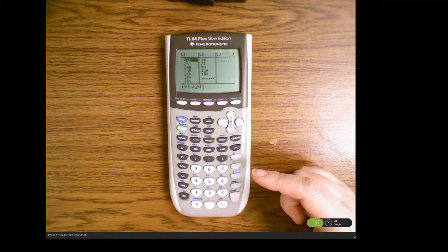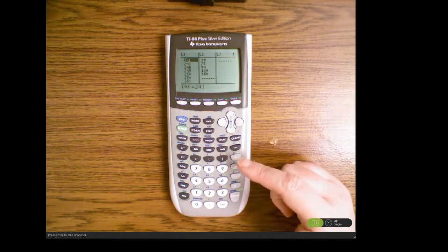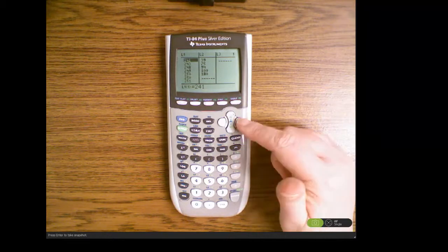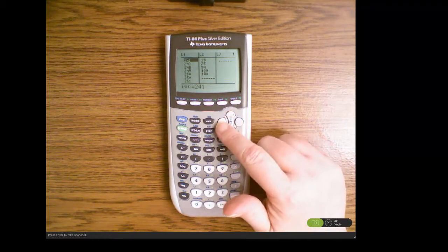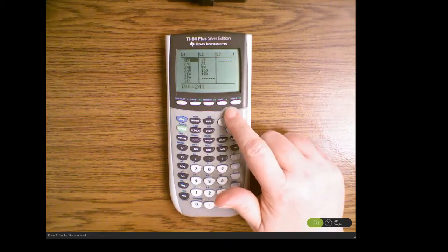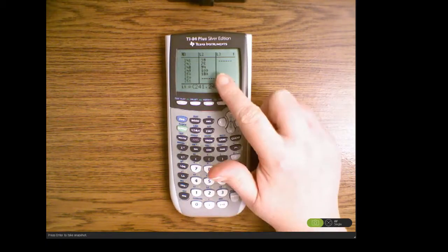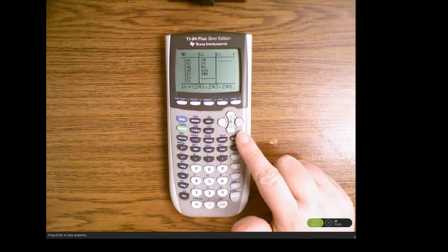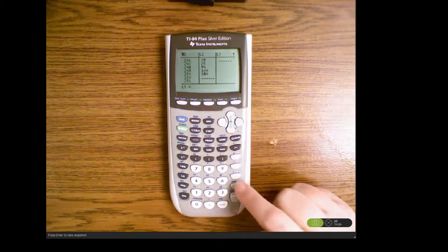I have some data in my list so I want to clear the list. There are a couple of ways I can do that. I can move my arrows up and over till the L1 is highlighted and press clear and then enter.